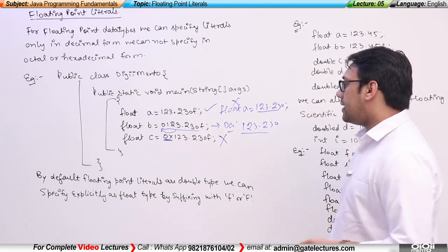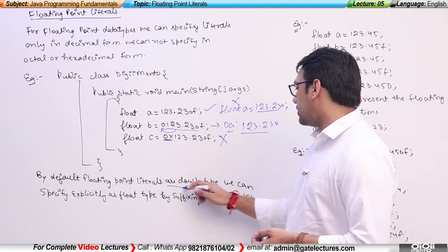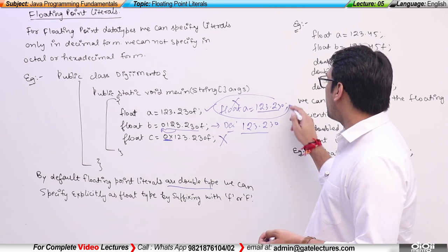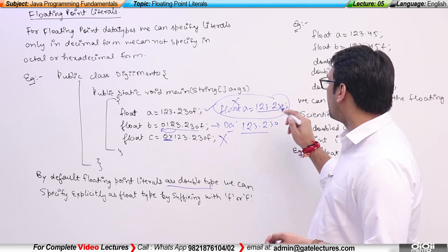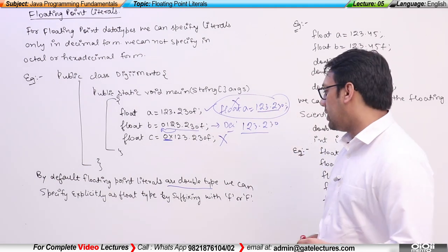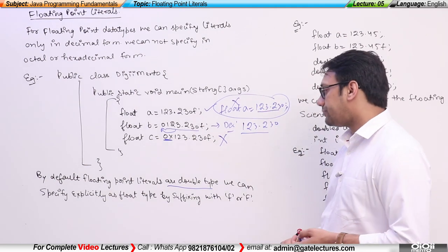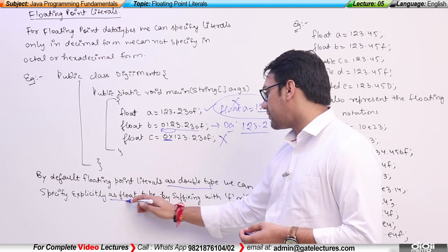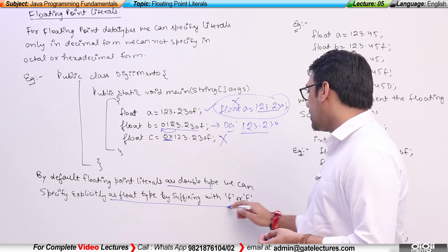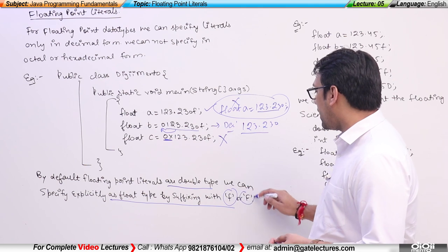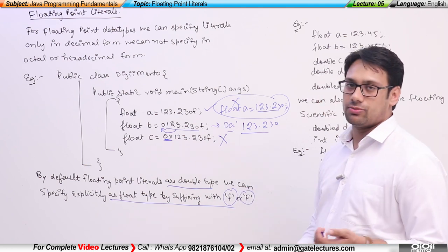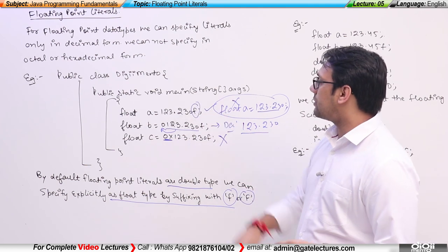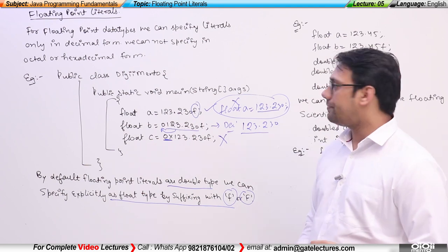By default, floating point number literals are double type. As you can see, if you have not written 'f' the number is by default a double type. We can specify it explicitly as a floating point type by suffixing the number with 'f' or 'F' — for example, suffixing this number with small 'f'.